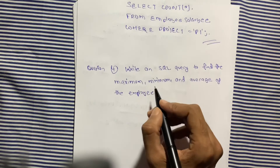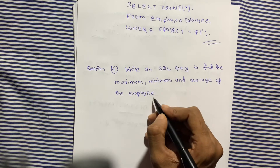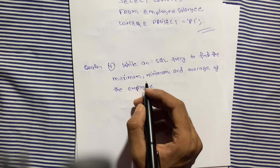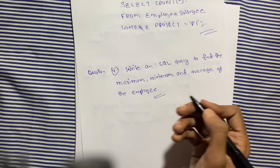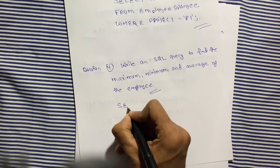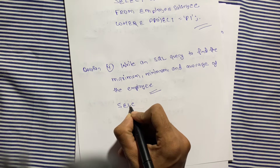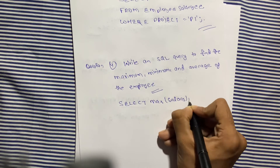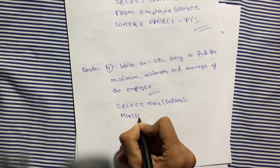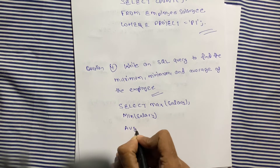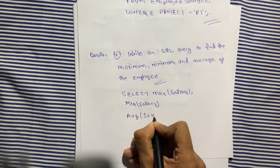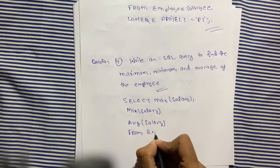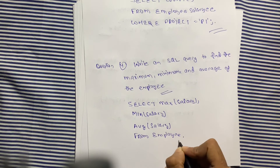The fourth question is: write an SQL query to find the maximum, minimum, and average salary of employees. For this we use aggregate functions. The query is: SELECT MAX(salary), MIN(salary), AVG(salary) FROM employee. This is our fourth query.